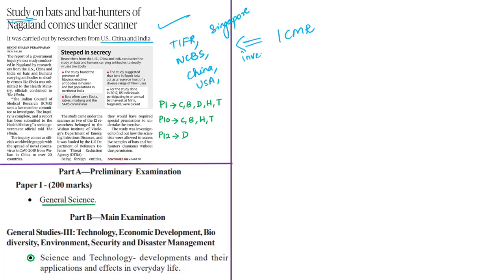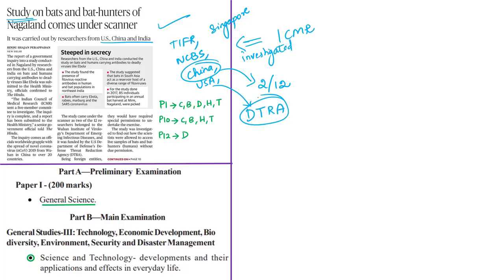The study became an issue because it accessed live bat samples and bat hunters without due permission. Two of twelve researchers belonged to the Wuhan Institute of Virology, and the study was funded by the US Defence Threat Reduction Agency. Since the study involved foreign entities, special permission from the Government of India was required. The important focus for us, however, is the study's findings.